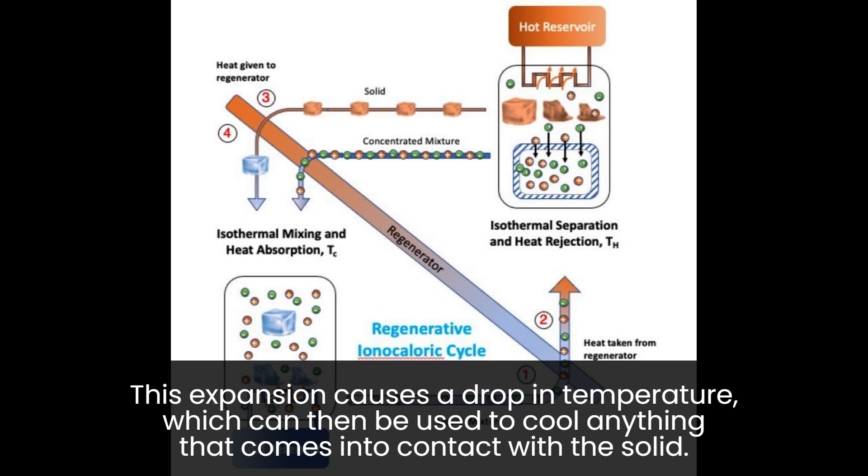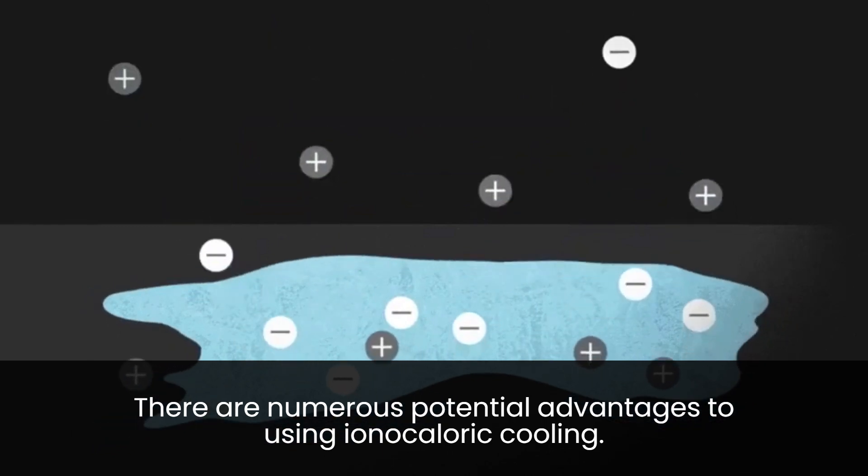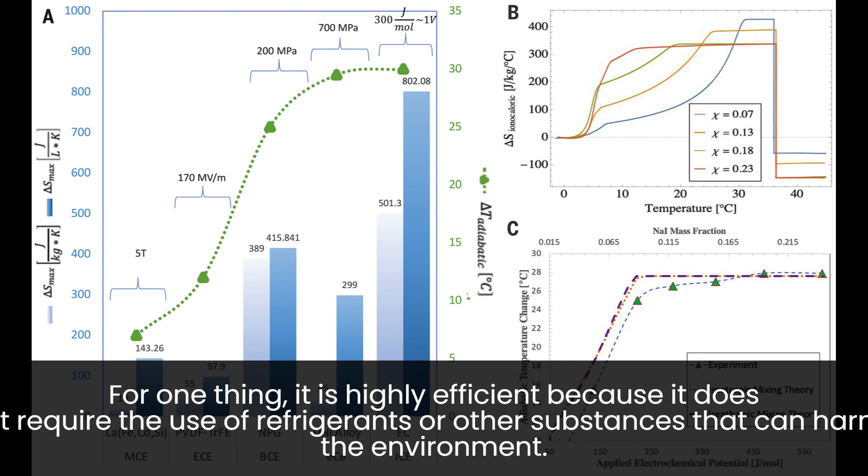which can then be used to cool anything that comes into contact with the solid. There are numerous potential advantages to using ionocaloric cooling. For one thing, it is highly efficient because it does not require the use of refrigerants or other substances that can harm the environment.